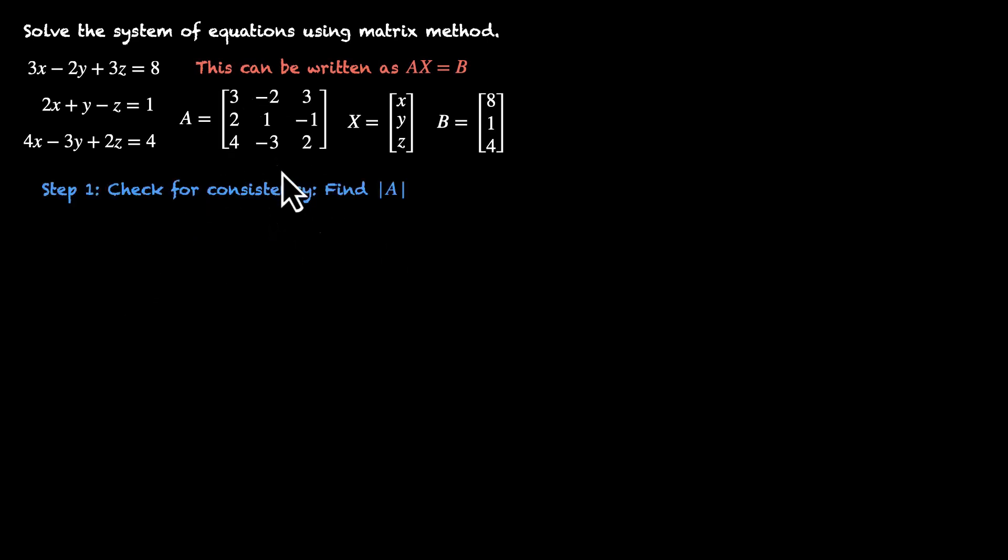So we need to make sure that this determinant is not equal to 0. Let's check for consistency. Let's find the determinant of A. That's step one. So determinant of 3, -2, 3, 2, 1, -1, 4, -3, 2. That's 3 times (2 - 3) + 2 times (4 + 4) + 3 times (-6 - 4). This is 3 times -1, that's -3, 2 times 8, that's 16, 3 times -10, that's -30. So this is 16 - 33, that's -17. Negative number is fine. As long as it's not 0, we're okay. So we can actually find A inverse. We can proceed.